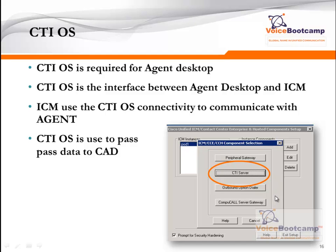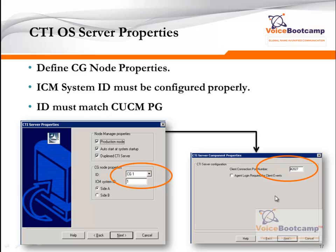CTI OS is required on the PG. CTI OS is required for the desktop agent, which interfaces between the agent desktop and ICM. ICM will use CTI OS connectivity to communicate with the agent and various other devices. CTI OS is used to pass data to the CAD system, for example. We're going to install a CTI OS CG node by adding a new peripheral called CTI OS, then define the ICM system ID, which is basically the DMP ID or the process ID. The client connection port number 42027 is very important because this is the port that will be used by the CTI OS server to communicate with CTI OS.